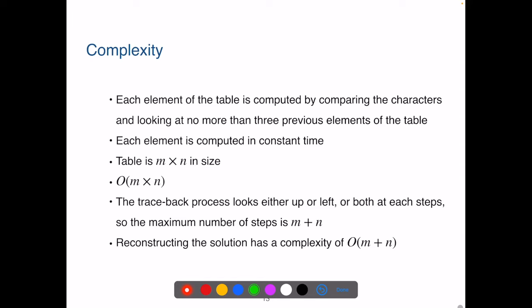Now, what is this DP algorithm's complexity? Note that each element of the table is computed by comparing the current letters, then looking at either one or three surrounding cells in the table, all of which have already been computed. Thus, each element is computed in constant time. Since the table is m times n, this part of the algorithm that fills the table runs in big O of m multiplying n time, where n and m are the lengths of the two sequences.